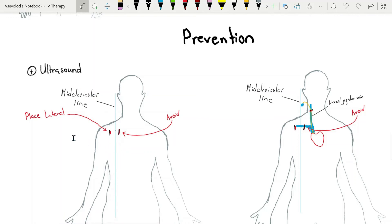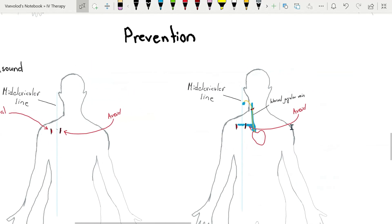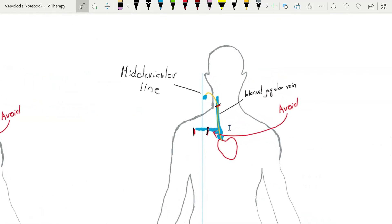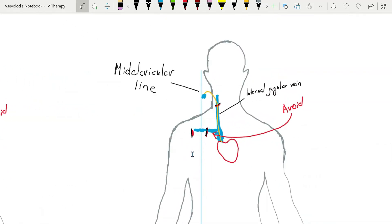Insertion of catheter lateral to the midclavicular line decreases the risk. Pinch-off syndrome can often be avoided when the central catheter is placed more lateral or if the internal jugular approach is employed.